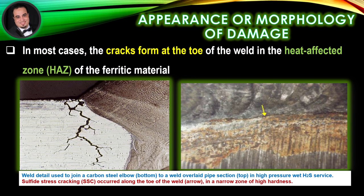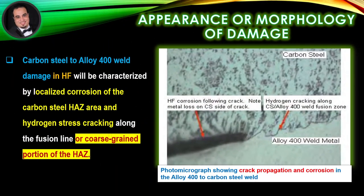Appearance or morphology of damage. In most cases, the cracks form at the toe of the welds in the heat-affected zone of the ferritic material, as illustrated in figures. Carbon steel to alloy 400 weld damage in hydrofluoric acid will be characterized by localized corrosion of the carbon steel heat-affected zone area and hydrogen stress cracking along the fusion line or coarse-grained portion of the heat-affected zone, as illustrated in photomicrograph images.